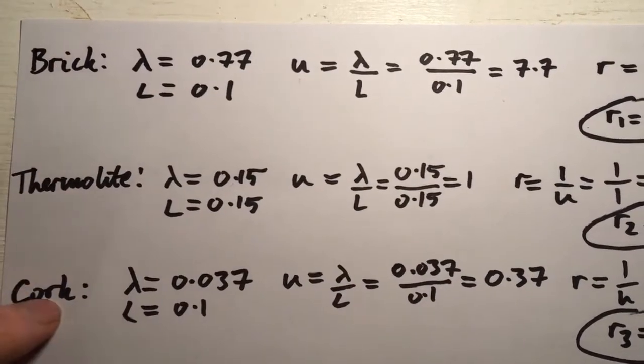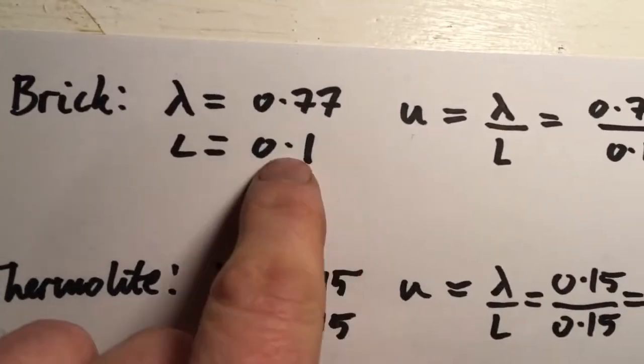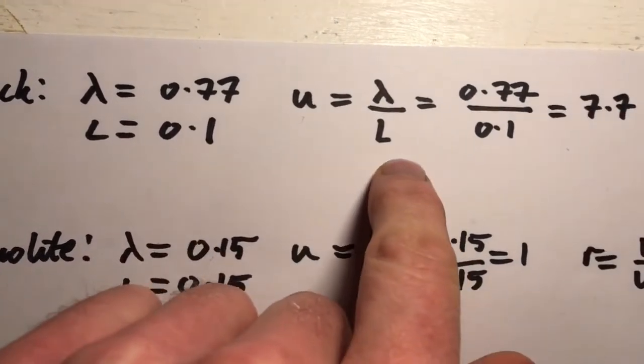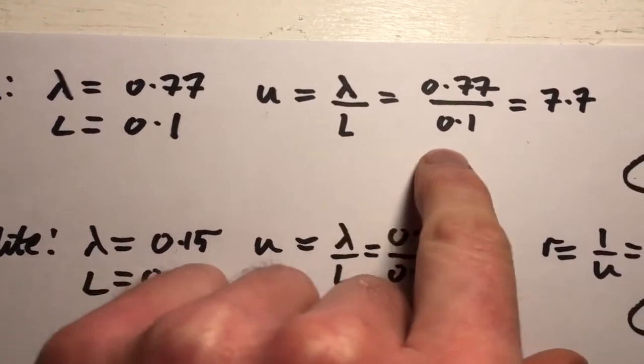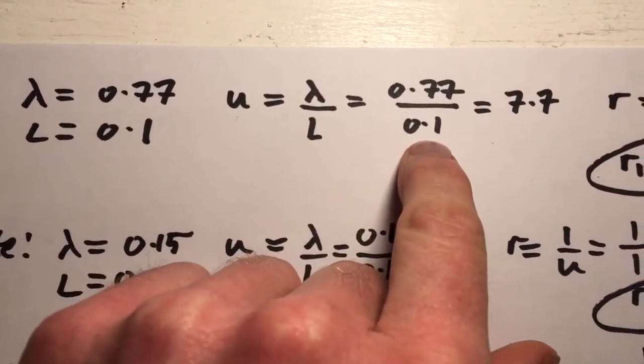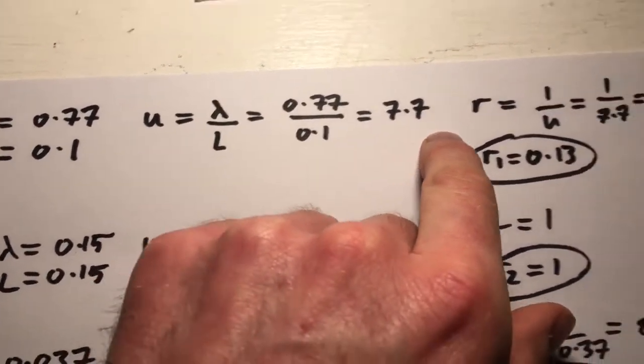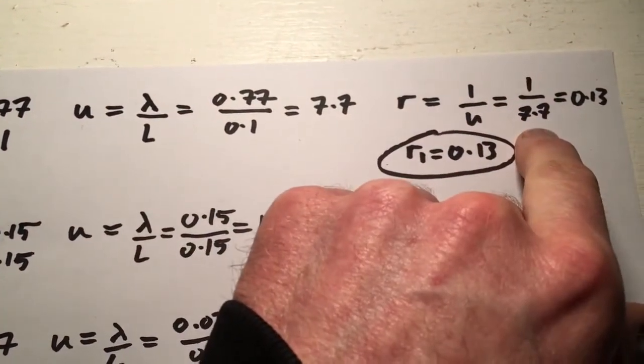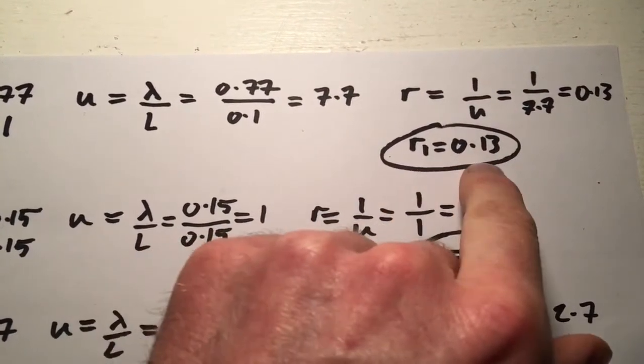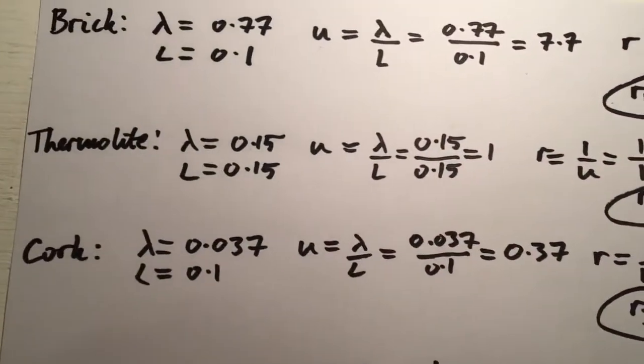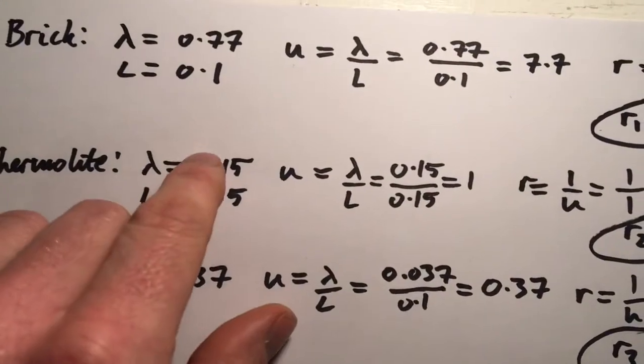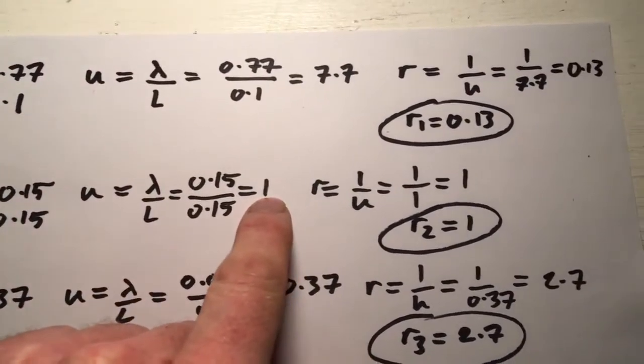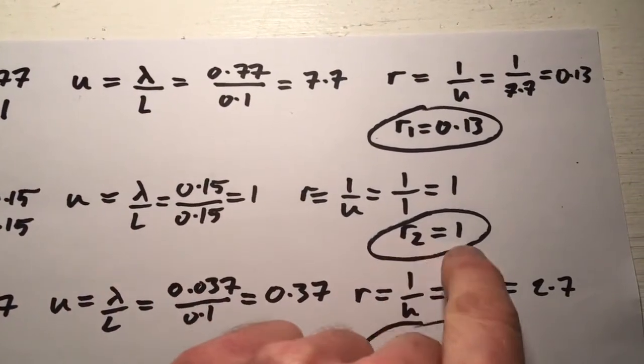So we have brick, thermalite, and cork. For brick, lambda equals 0.77, and L equals 0.1. U, which is lambda over L, equals 0.77 over 0.1, which equals 7.7. R, the inverse of U, 1 over 7.7, equals 0.13. So R1 is 0.13. And similarly for thermalite, lambda equals 0.15, L equals 0.15, so U is 1, and R2 is 1.